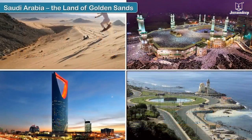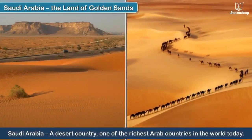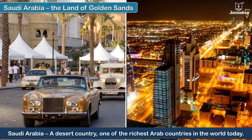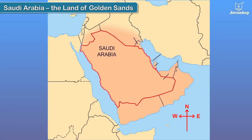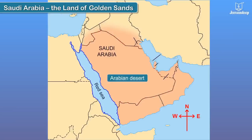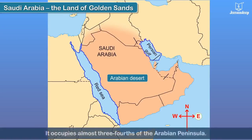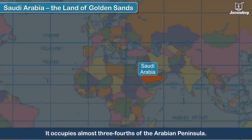Saudi Arabia, the land of golden sands. Let us study Saudi Arabia, a desert country and one of the richest Arab countries in the world today. Saudi Arabia is a large country situated in the Arabian desert, with the Red Sea to its west and the Persian Gulf to its east. It occupies almost three-fourths of the Arabian Peninsula.